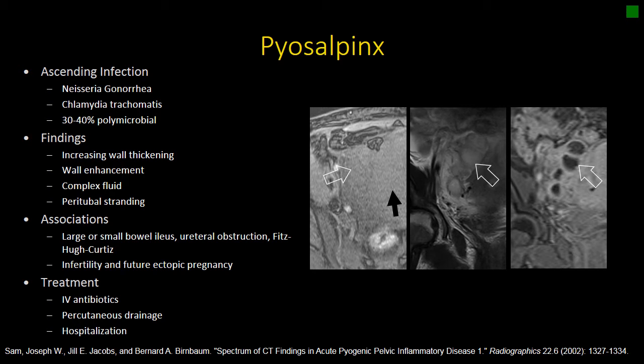Pyosalpinx is what's going to give rise to more serious infections — tubo-ovarian abscesses, spread of bacterial infection into the peritoneal cavity, and what's commonly referred to as Fitzhugh-Curtis, or perihepatitis.